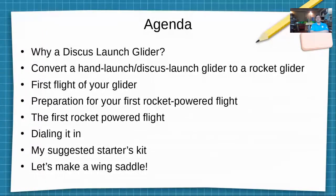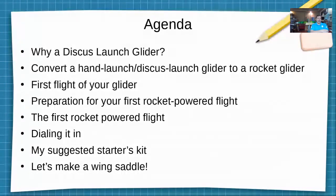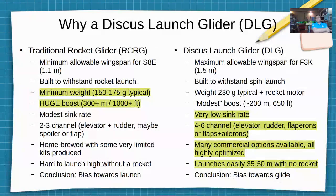Those are the three essential parts of S8E. I'm going to cover: why we want to think about discus launch gliders in the first place, how to convert a DLG to a rocket glider, the first gliding flight, then the first rocket powered flight, dialing it in, my suggested starter kit, and at the end we're going to actually make a wing saddle.